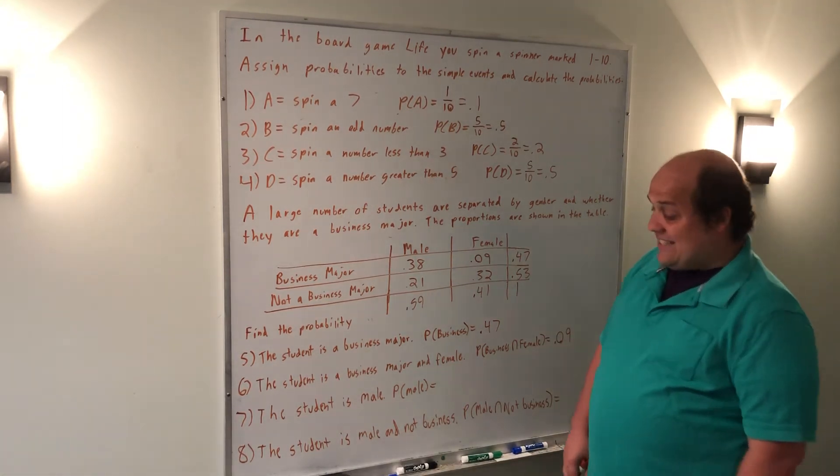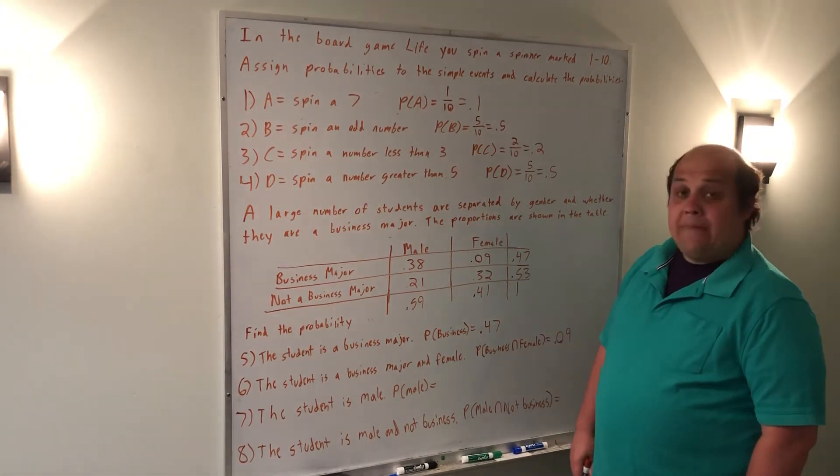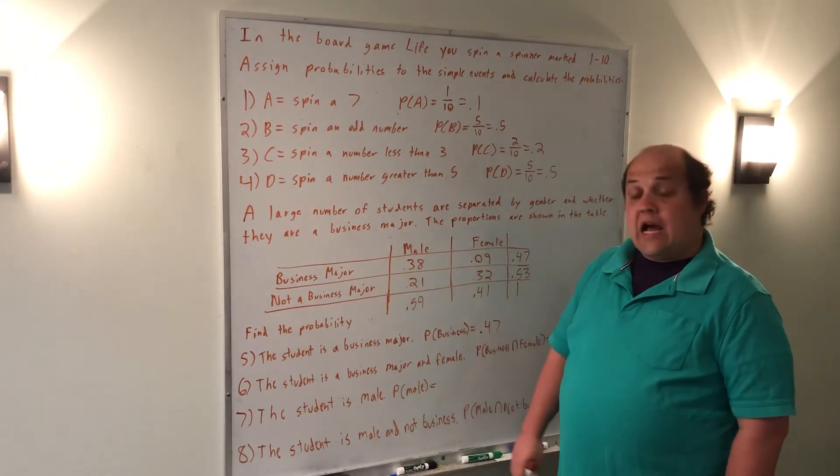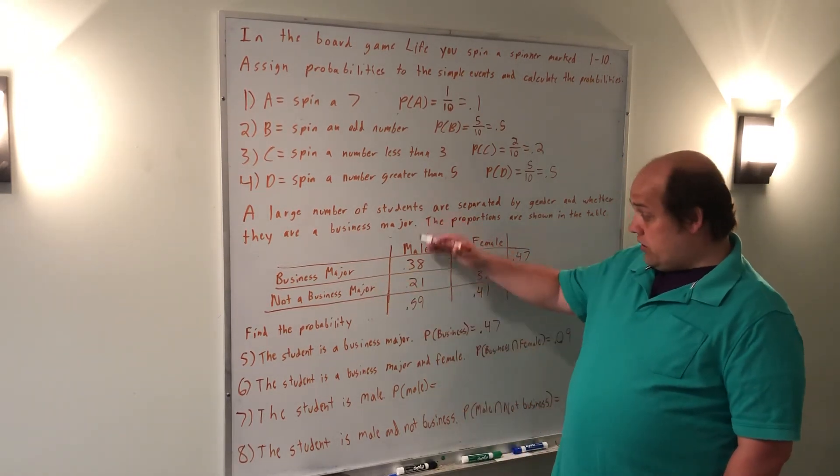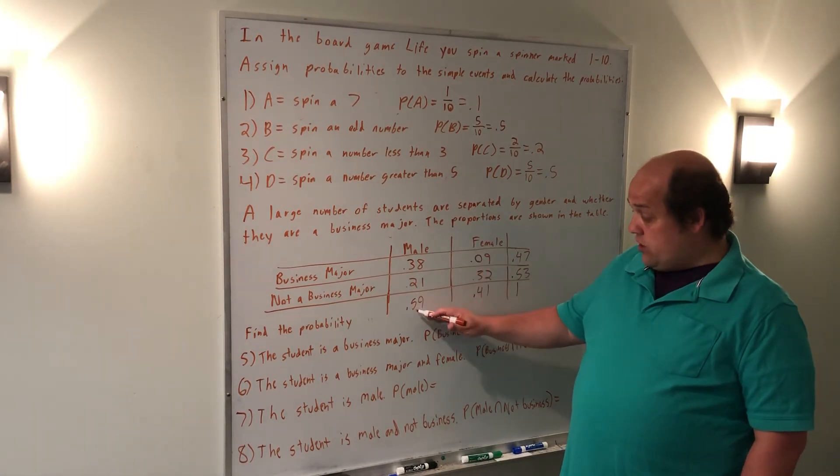For question 7, it says the student is male. Male is a column that includes both business majors and not a business major. So I want the total of this whole column, which is 0.59.